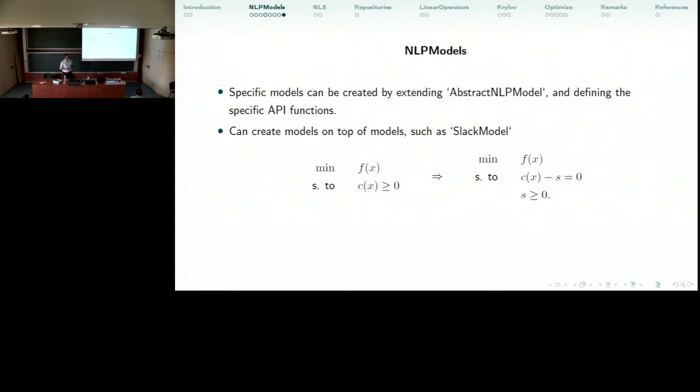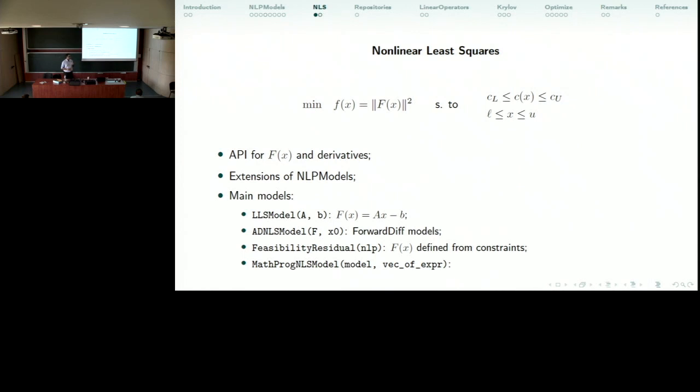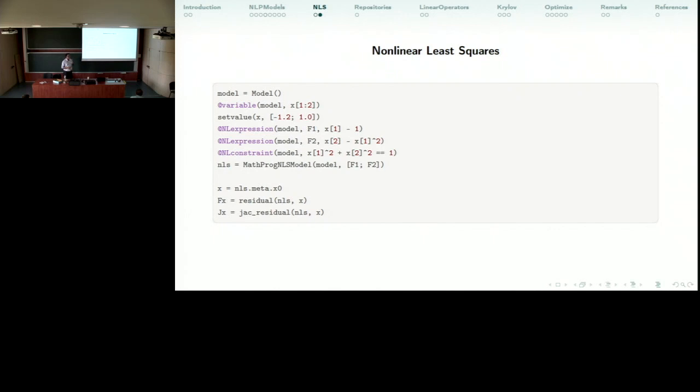And as I said, creating a new model should be easy. You can just extend the AbstractNLPModel, define some specific API functions. For instance, here I have a SlackModel which receives another model and creates a slack version of that model. Another extended model is the nonlinear least squares model, something that I work on now. Apart from being an NLP, it's also a model which has a residual function F. You can work and you can for instance call Ipopt on this and it will work on this kind of model. But you can also create a specific model and get the residuals.